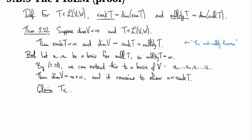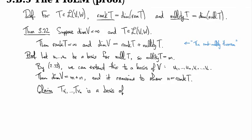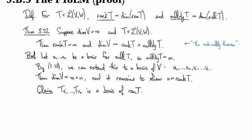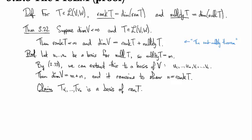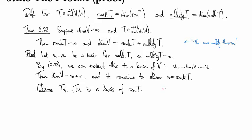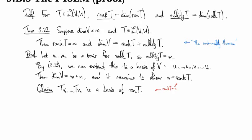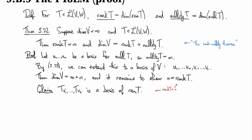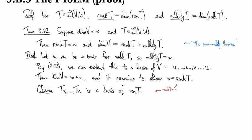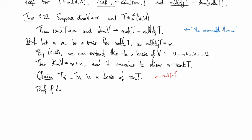That Tv1 through Tvn, this list, is a basis of the range. So with the idea then that rank T equals n. So how do you prove that something has a given dimension? Well the easiest way is to exhibit a basis and count the number of things in it and show that it's the right number. So let's look at the proof of this claim.